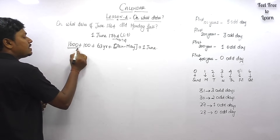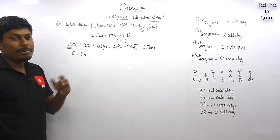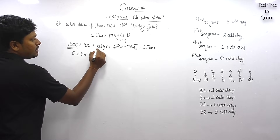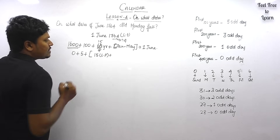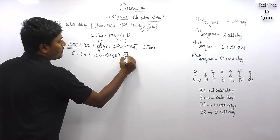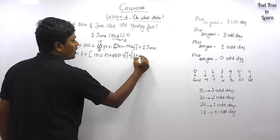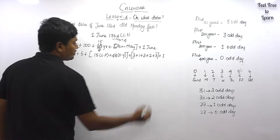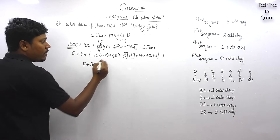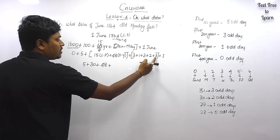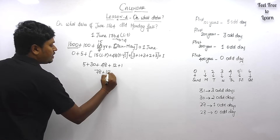For 1600 years: zero odd days. For the first 100 years: five odd days. For 63 years, divide by four — we get 15 leap years and 48 ordinary years. January: three odd days. Because it's a leap year, February has one odd day. March: three odd days. April: two odd days. May: three odd days. Each leap year gives two odd days: 15 × 2 = 30. Each ordinary year gives one: 48 × 1 = 48. Total sum: 5 + 30 + 48 + 3 + 1 + 3 + 2 + 3 + 1 = 96 days.